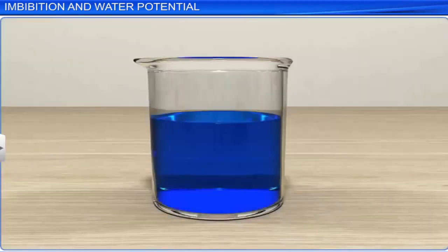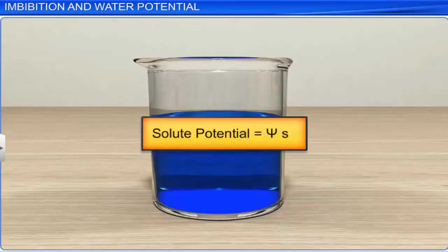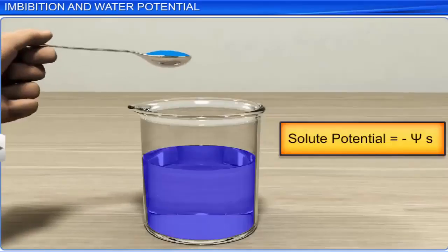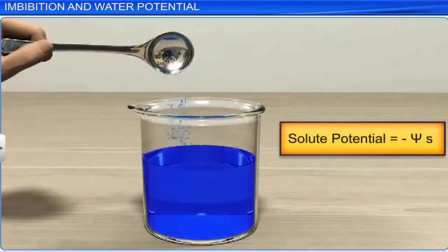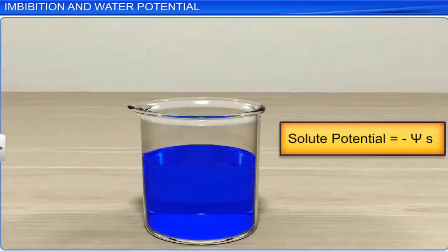The magnitude of the lowering of water potential due to the addition of solutes is called solute potential. Solute potential is represented by the symbol Psi S, and it is always negative. Solute potential becomes increasingly negative with the addition of solutes.